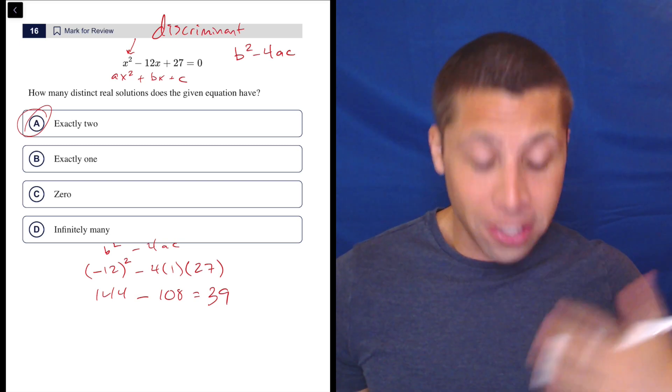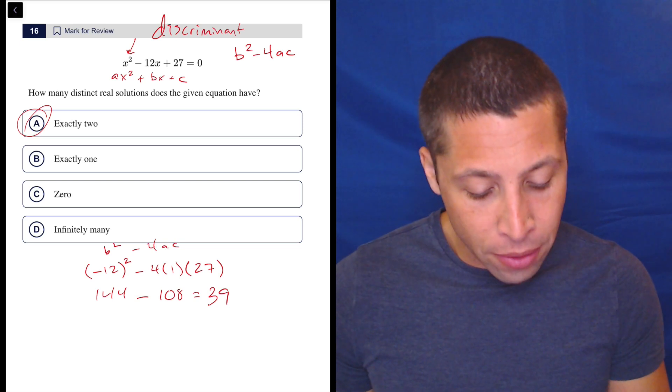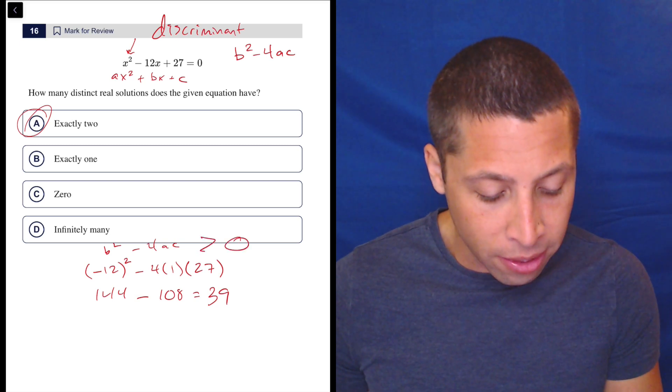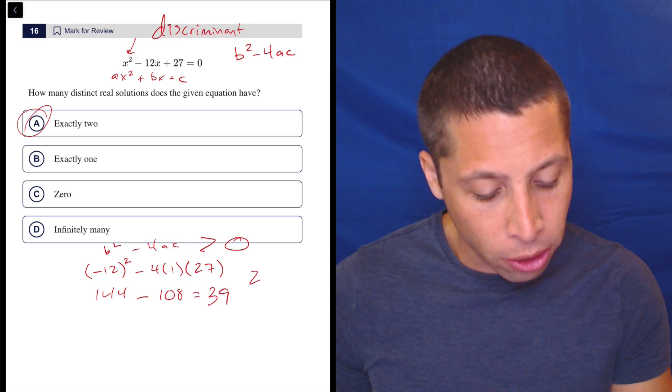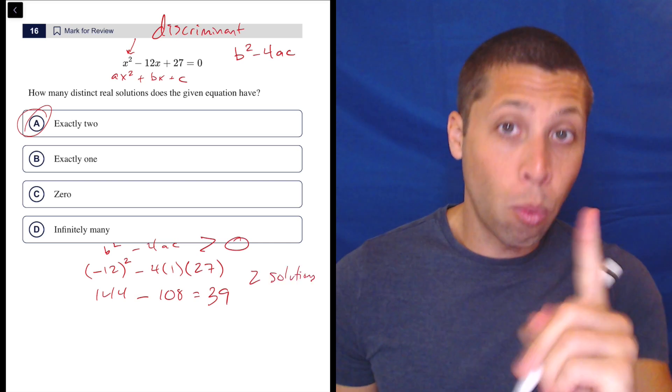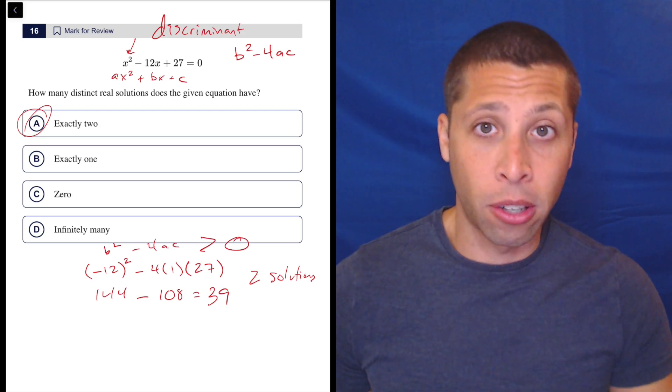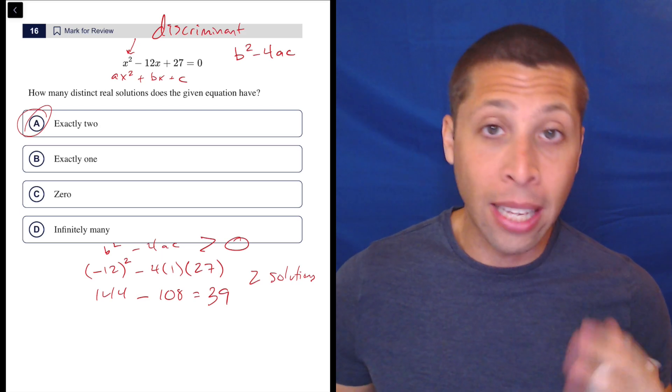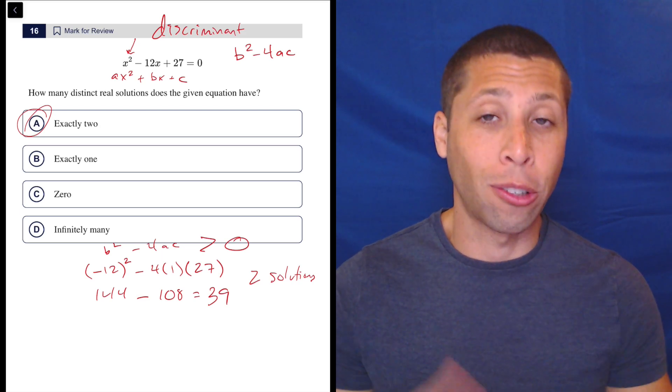So what does that tell us? Well, it doesn't tell us there's 39 solutions. But if this discriminant is greater than 0, then there are two solutions. That's what that means. If it's equal to 0, then we have one solution. And if it's less than 0, then we have no solutions. I have a lesson on that. I definitely recommend that you watch for more detail.